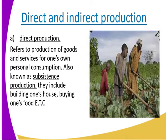Examples of direct production include building one's house, growing one's food, and cultivating a piece of land, as you can see in the image. All of that is direct production.